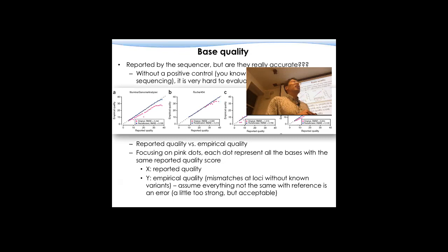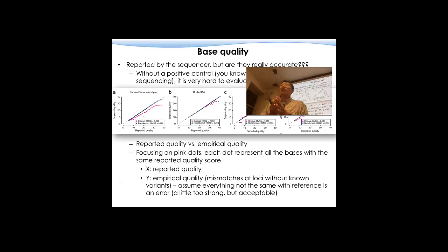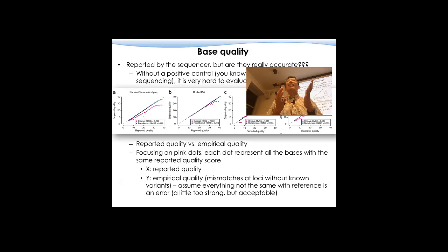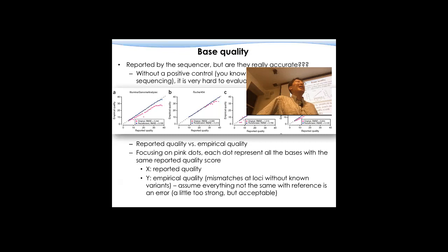What you are looking at is two groups of dots — one pink, one blue. Just focus on the pink ones. The pink ones are the signals you receive before we do the recalibration. If we lump everything from Q30 to 31 into a group, among these reads I'm supposed to have 0.1% chance of making a mistake. But when I calculate the empirical quality — how many are wrong compared to how many I evaluated — if I see more than 0.1%, that means the reported quality is actually better than the empirical, i.e., better than the real ones.